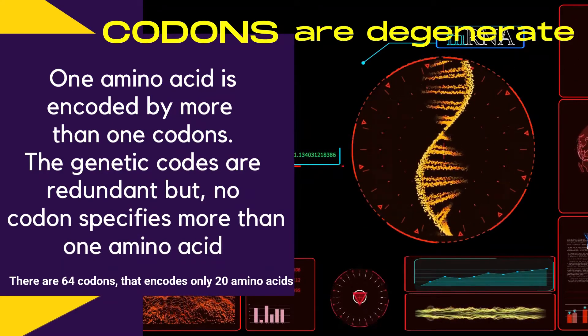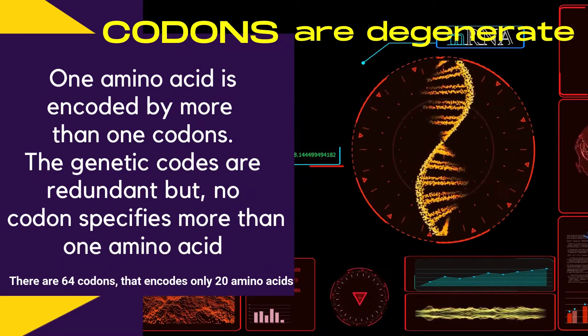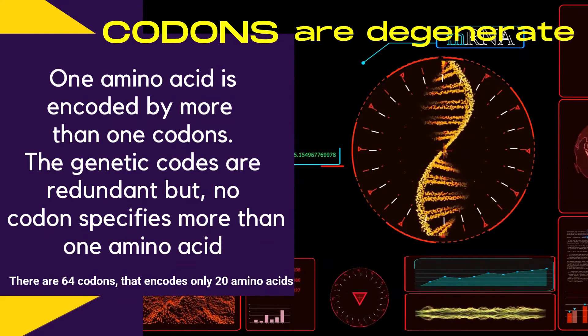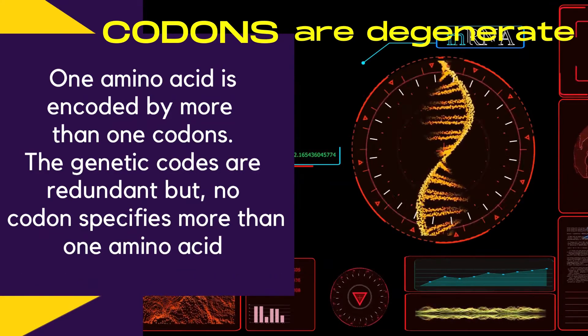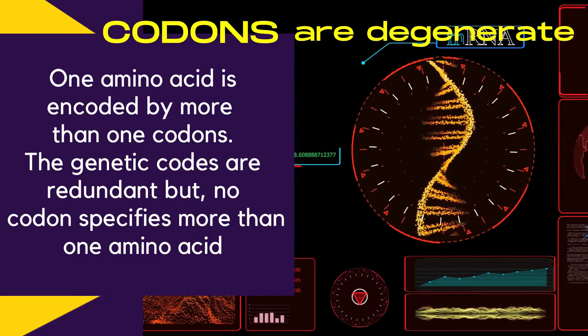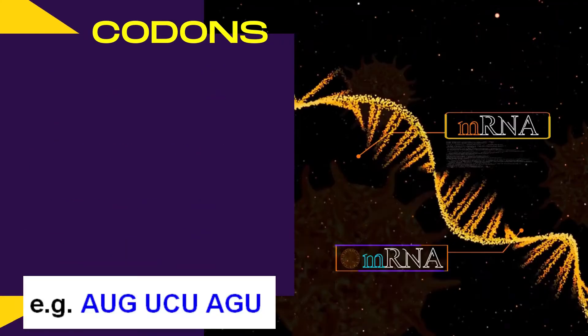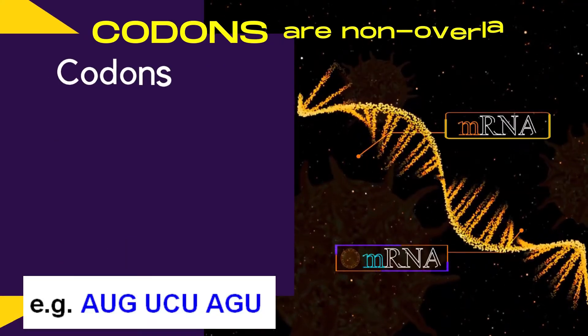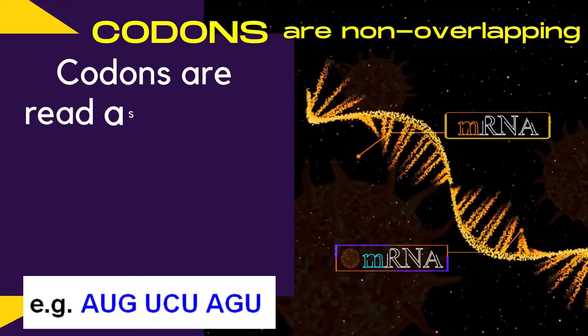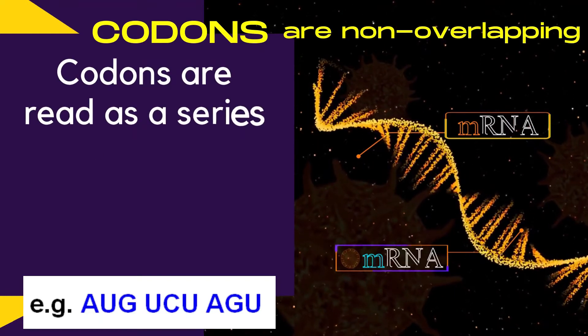There are 64 codons that encode only 20 amino acids. Codons are read as a series of non-overlapping base triplets.